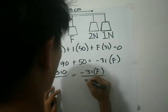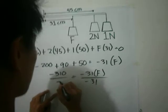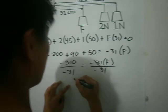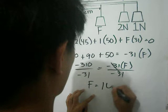Then divide both side by negative 31. So cancel this, F equals 10.